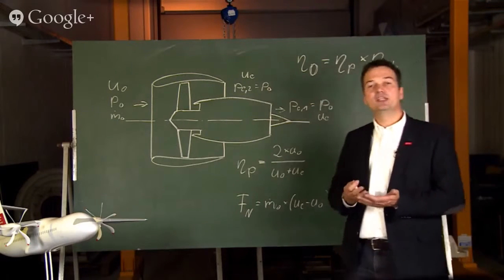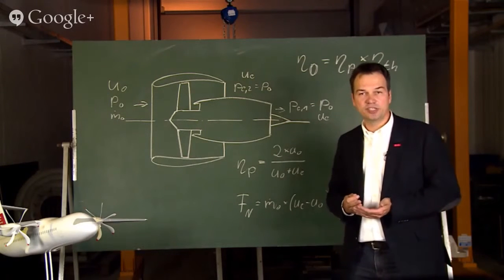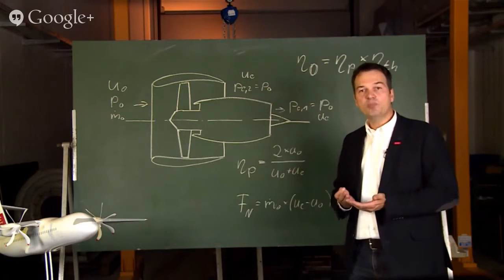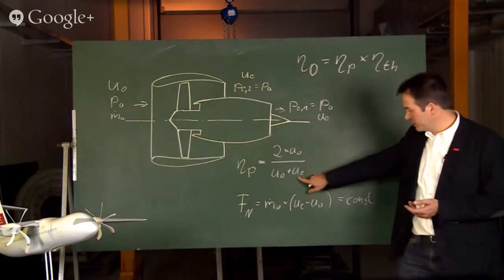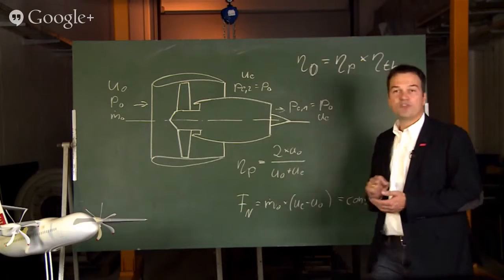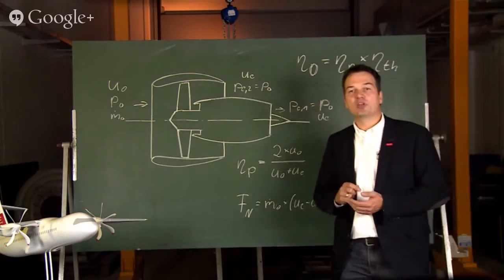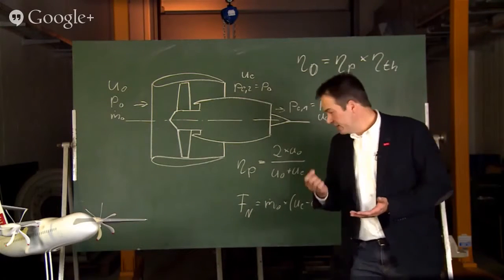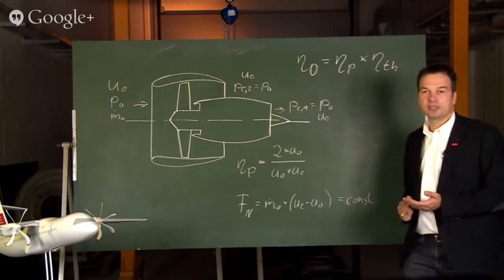Using this and trying to increase the propulsion efficiency to a maximum would mean to lower the exhaust velocity to the flight speed. But of course that does not work because that would reduce the net thrust to zero.